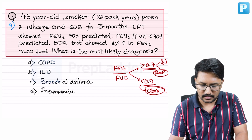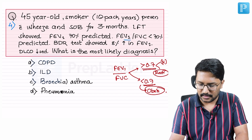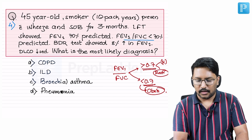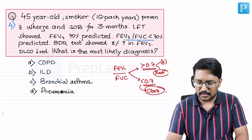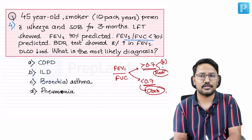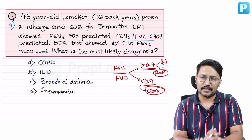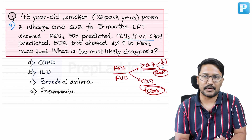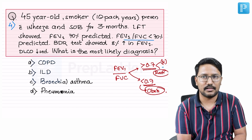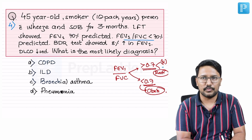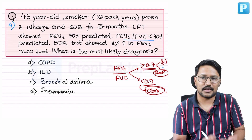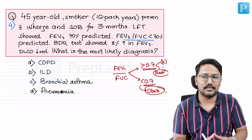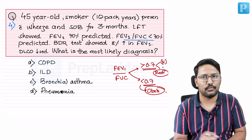In this case, FEV1/FVC is less than 70% or 0.7, so this patient has obstructive lung disorder. To distinguish between a normal patient and restrictive lung disorder when FEV1/FVC is more than 0.7, we look at FVC and total lung capacity (TLC). In restrictive lung disorder, FVC is reduced and TLC is reduced, even though the ratio is preserved above 0.7. In a normal person, all lung volumes are normal and FEV1/FVC is 0.7 or above.